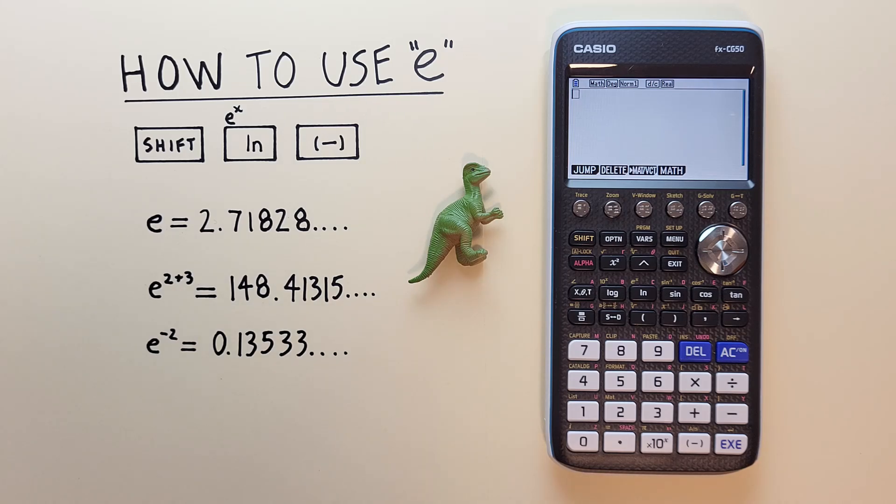Hello and welcome to HD Calcs. I'm Rick, and in this video we're going to have a look at how we can use e, also known as Euler's number, or the natural antilog, on the Casio FX CG50 graphing calculator.